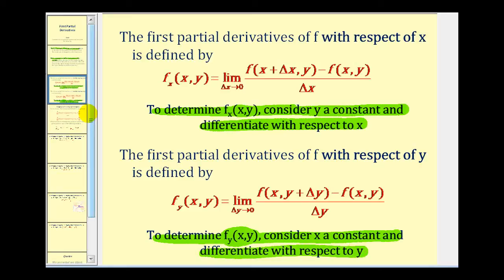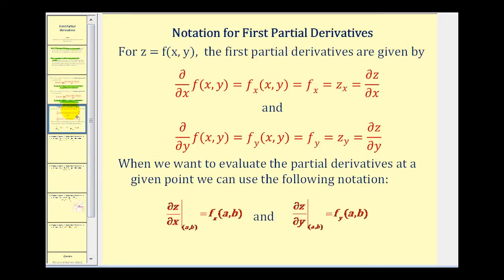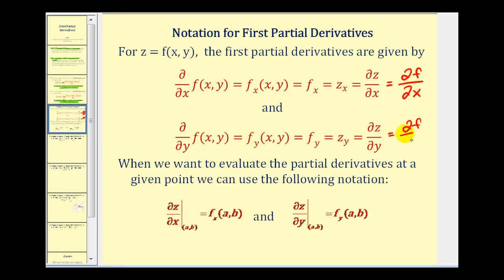Before we do that, let's take a look at some different notation for partial derivatives. All of these notations represent partial derivatives of f with respect to x or with respect to y, including the partial of f and the partial of z with respect to x and y. If we want to evaluate these at a specific point, we can use the notation shown below.